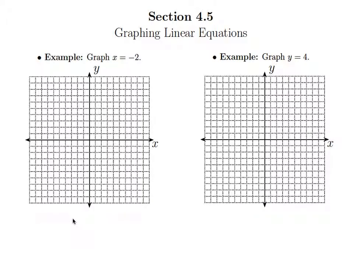What have we done in the past? We found ordered pair solutions, completed a table to find some solutions, then graphed those points on our coordinate plane and drawn a line through them. But here we look at this and say, well, there is no y.